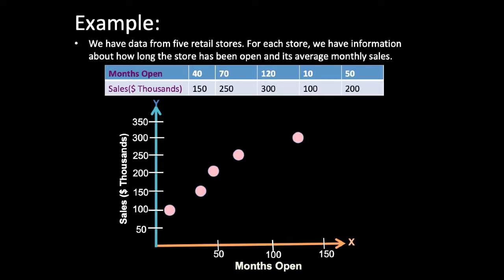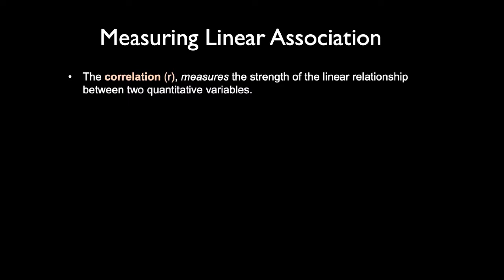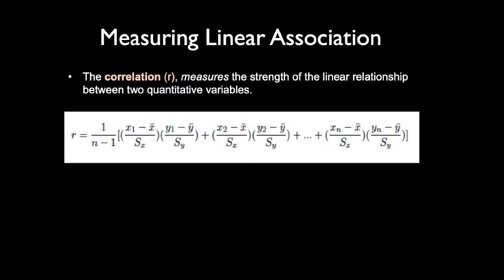Next, measuring linear association. The correlation, denoted by r, measures the strength of the linear relationship between two quantitative variables. We are going to talk about how to calculate the strength of the linear relationship between two quantitative variables. We have the equation: r equals 1 over (n minus 1) times the sum of [(xi minus x-bar over sx) times (yi minus y-bar over sy)].